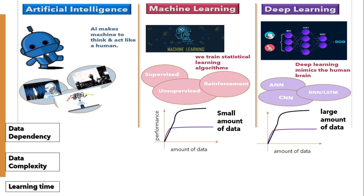Let's talk about data complexity. Deep learning algorithms can work with both structured and unstructured data, whereas machine learning algorithms perform well with structured data only. Data complexity increases when we shift from structured to unstructured data, and in those cases machine learning algorithm fails.